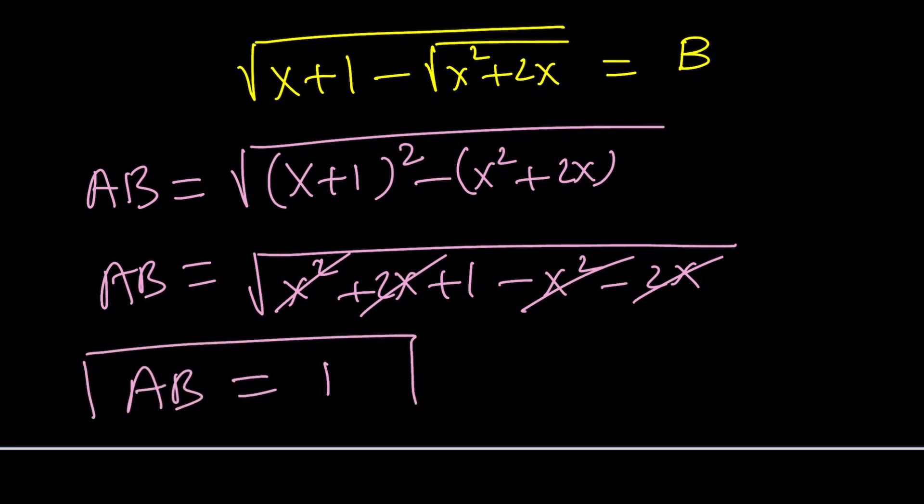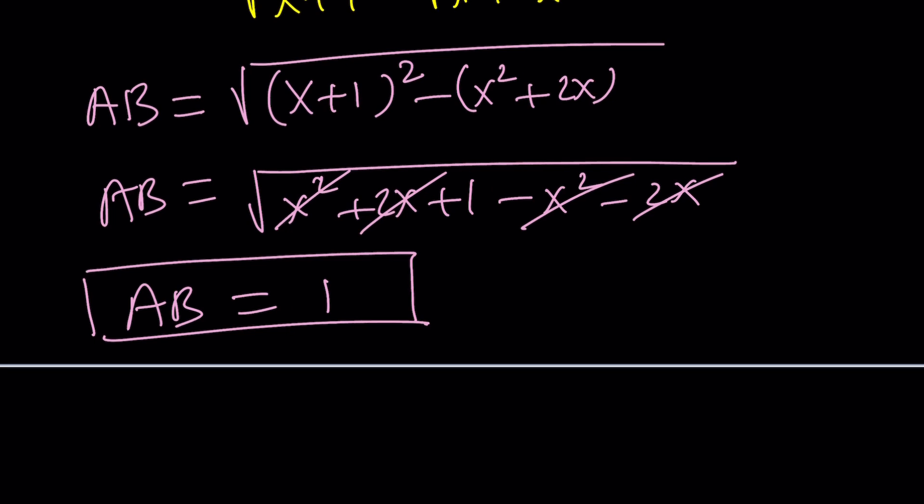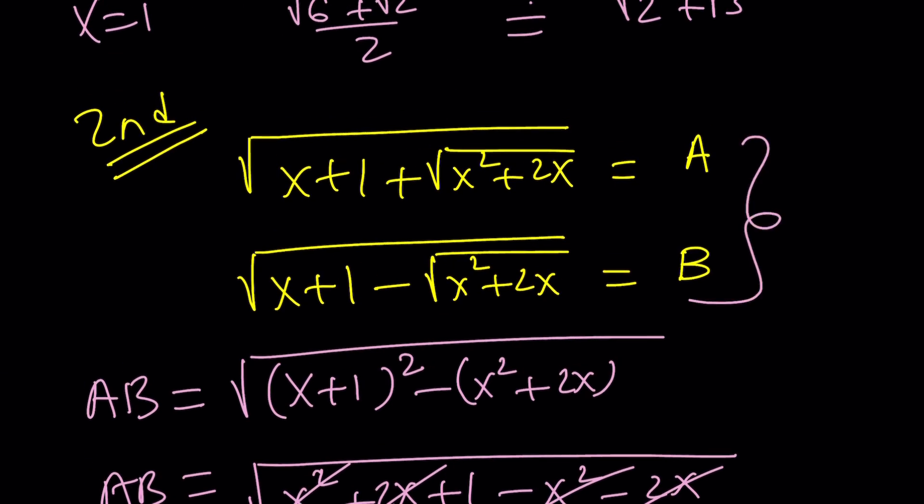So, AB is equal to 1, first of all. I don't really care about B. I'm just using B temporarily so I can get A. Make sense? Now, what are we going to do next? Here's the thing. We're going to go ahead and square each one of these.